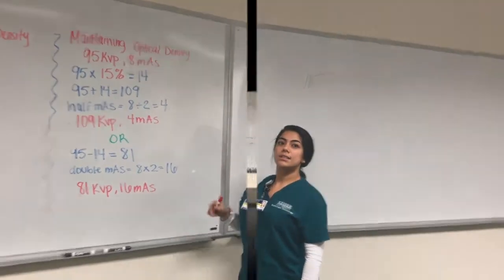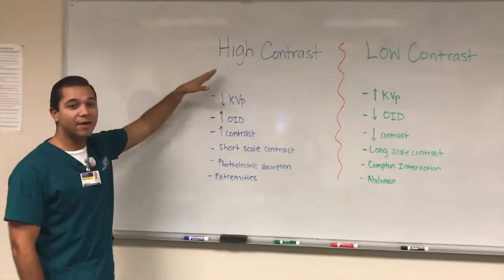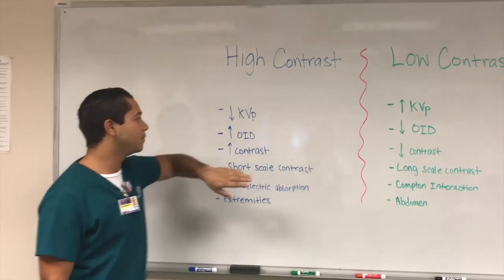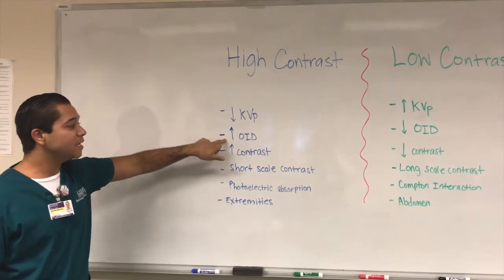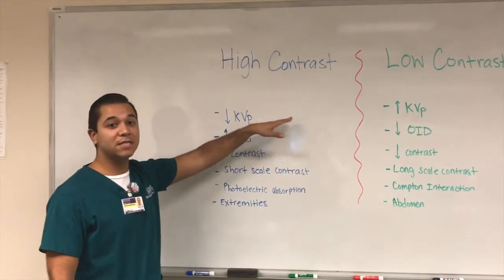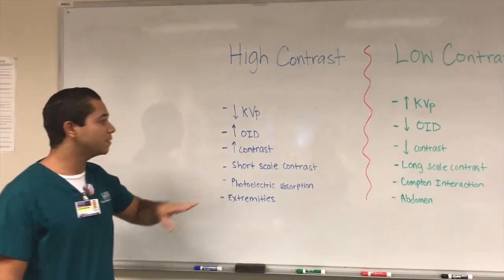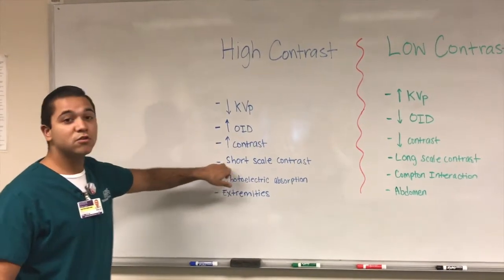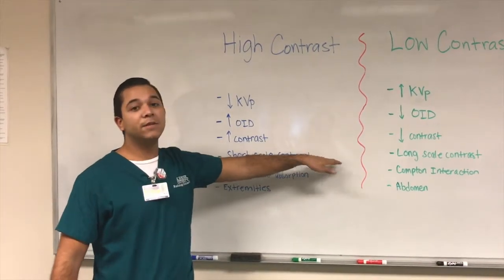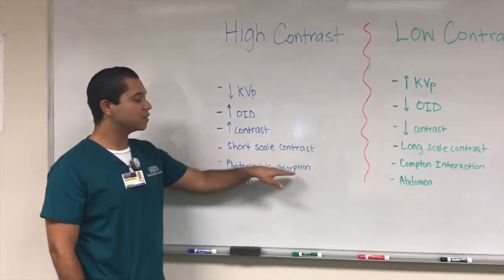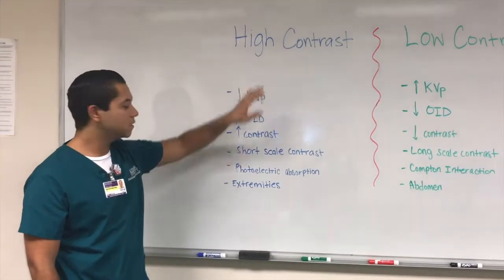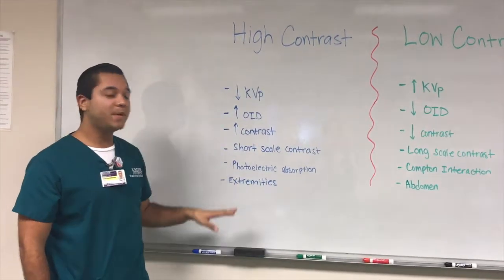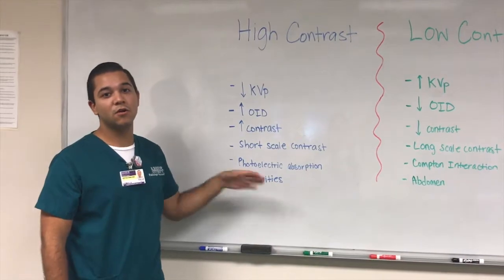High contrast decreases the kVp, meaning less penetration through the x-ray beam. An increase in OID — the distance between the object and the image receptor — produces high contrast, leading to short-scale contrast, giving an image that appears in black and white. Photoelectric absorption is the interaction that uses high contrast, and extremities are an example because less dense tissues are located there.